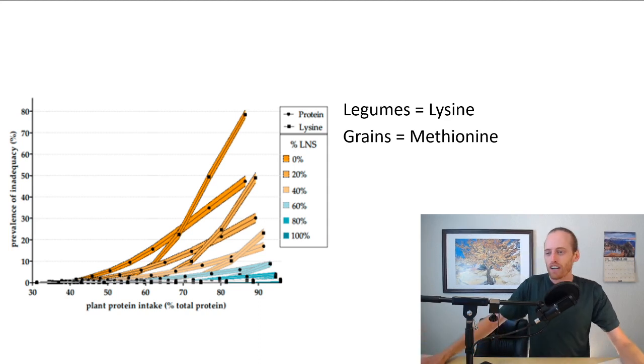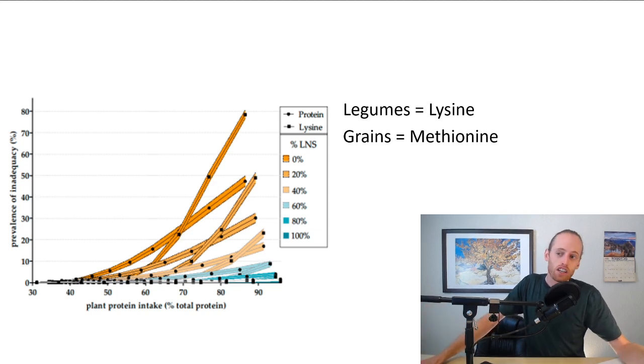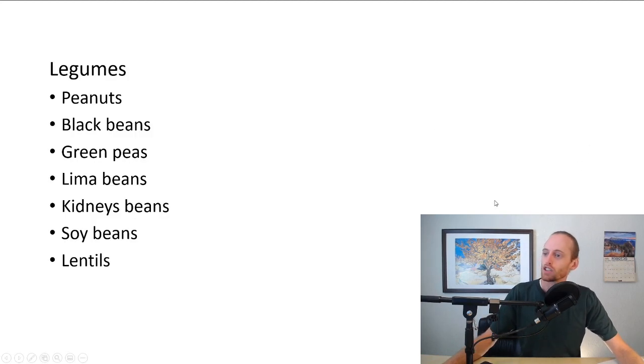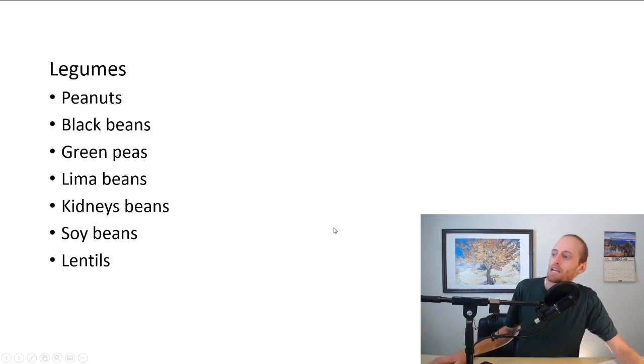I think really everybody - vegans, vegetarians, and meat eaters - should be having a good combination of legumes and grains in their diet anyways. Let's take a look at what legumes are. We got peanuts, black beans, peas, pretty much all beans, soybeans, lentils. You get the idea for legumes. We should be having these in our diet, particularly if you're vegan.